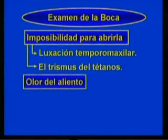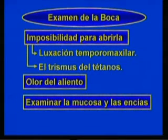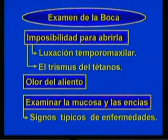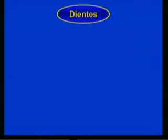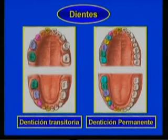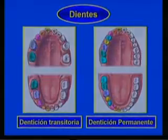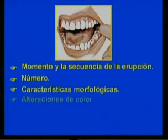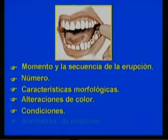Es importante percibir el olor del aliento y examinar la mucosa bucal y las encías. Para examinar los dientes, es importante que conozcan la edad aproximada de erupción de la dentición transitoria o primaria y la permanente. En ellos, valorarán el momento y la secuencia de la erupción, su número, las características morfológicas, las alteraciones de color, sus condiciones y las anomalías de posición.